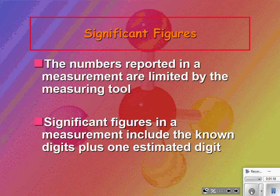The numbers reported in a measurement are limited by the measuring tool. We've seen that when we make estimates, right? On the skills review worksheet, we had the graduated cylinder with the meniscus. We measured the meniscus — we knew certain digits, and the very last digit we estimated. Depending on what your tool is, that determines where the estimated digit is.